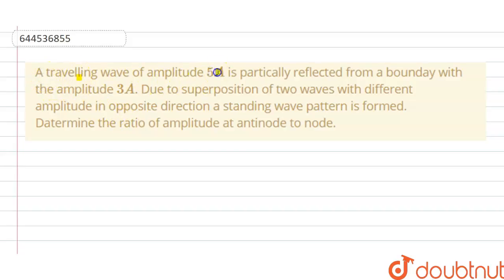Hello students, today our question is: a traveling wave of amplitude 5A is partially reflected from the boundary with amplitude 3A, and due to the superposition of two waves with different amplitude in the opposite direction, a standing wave pattern is formed.